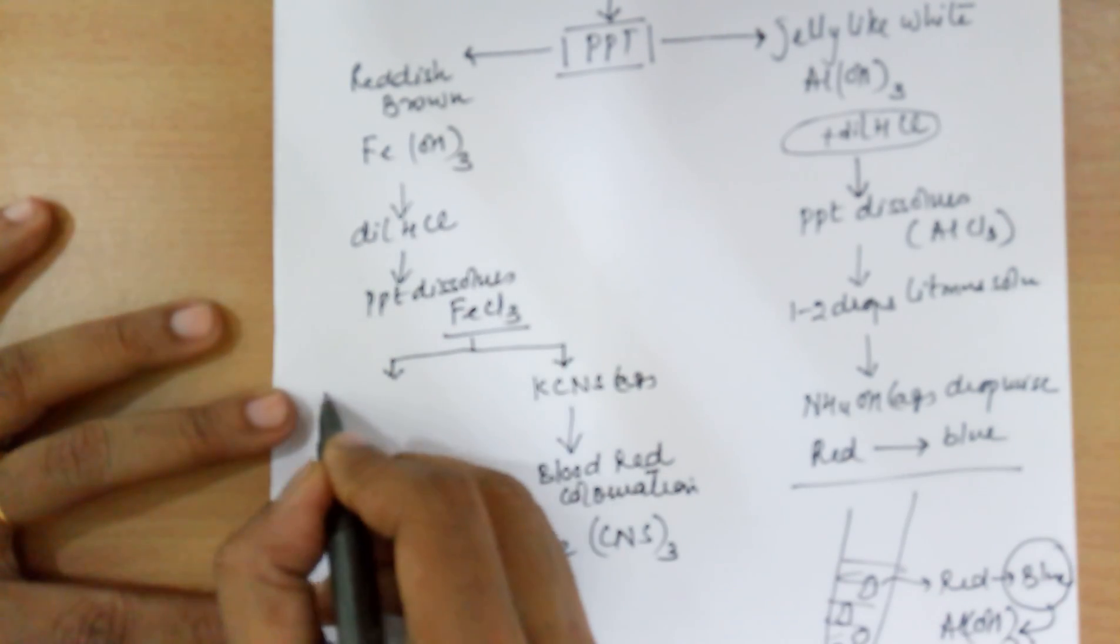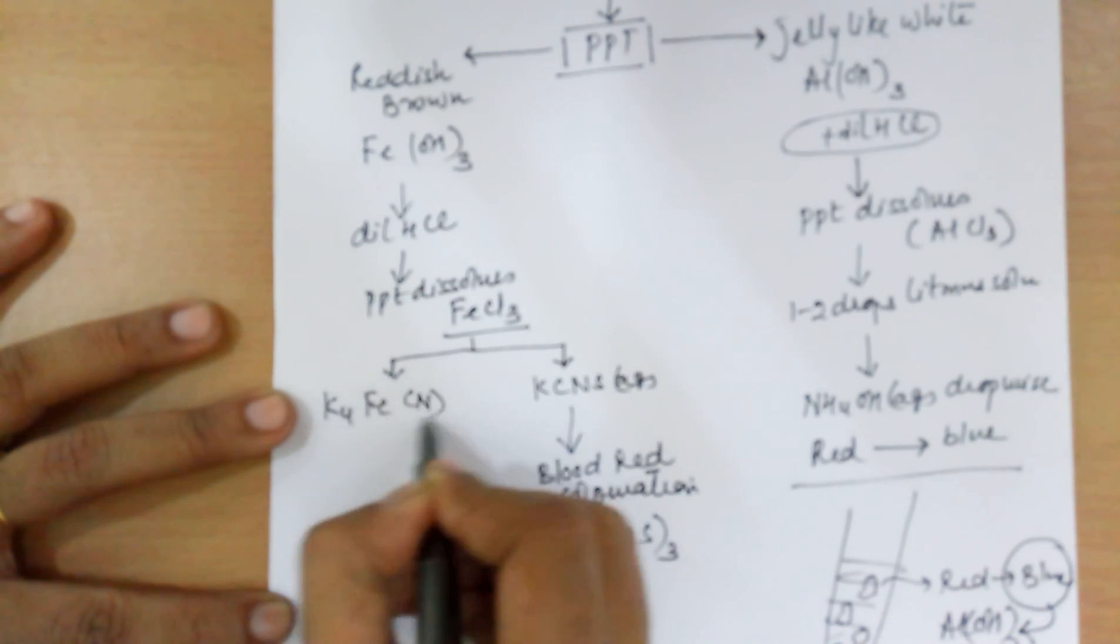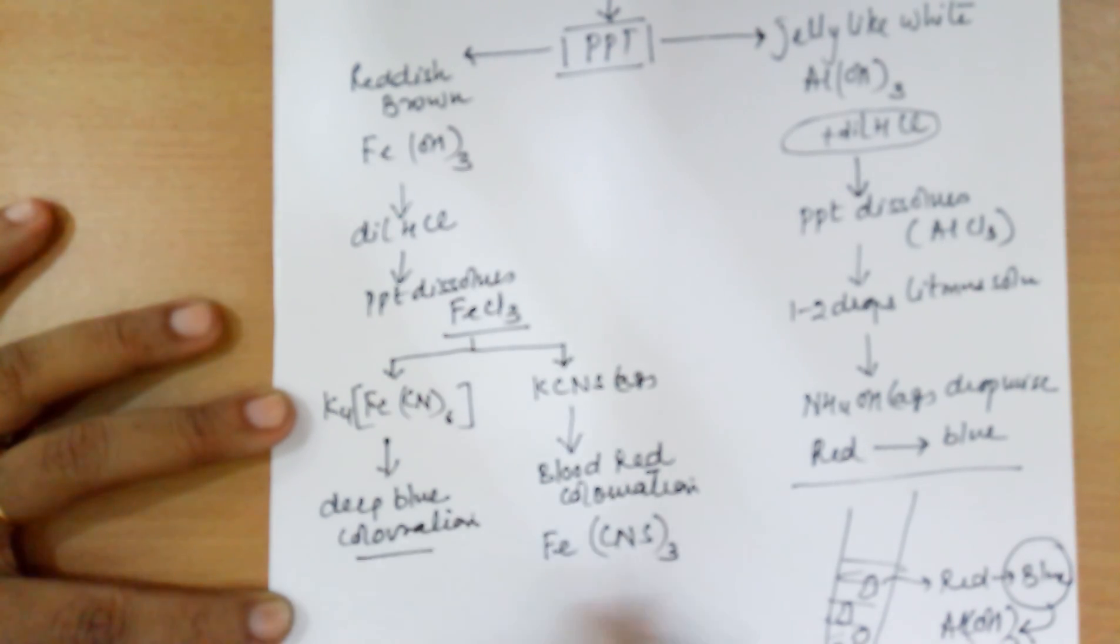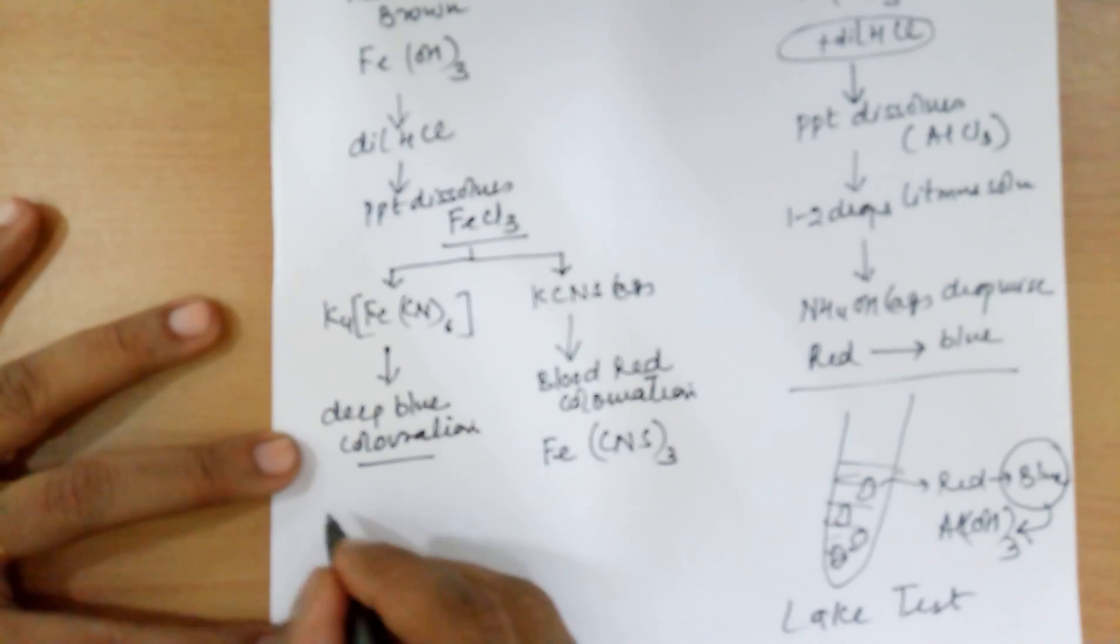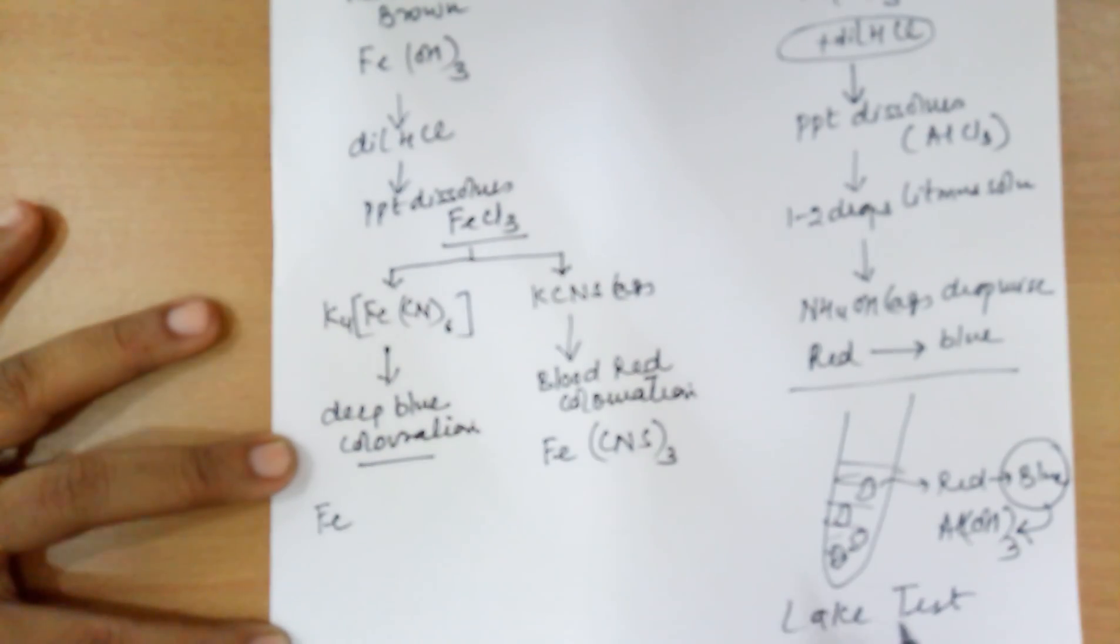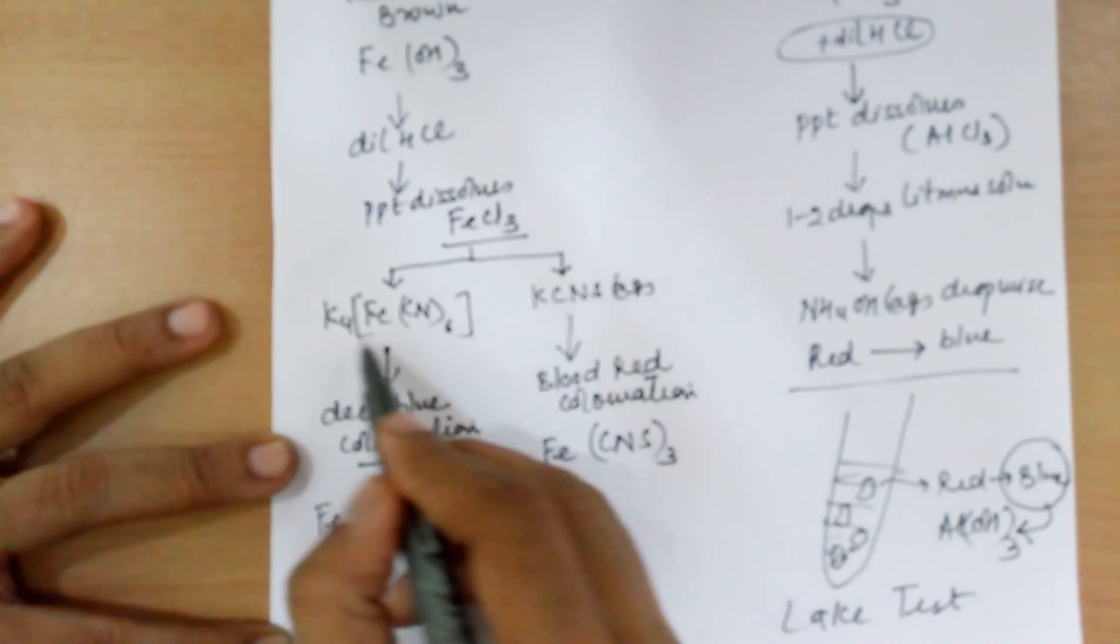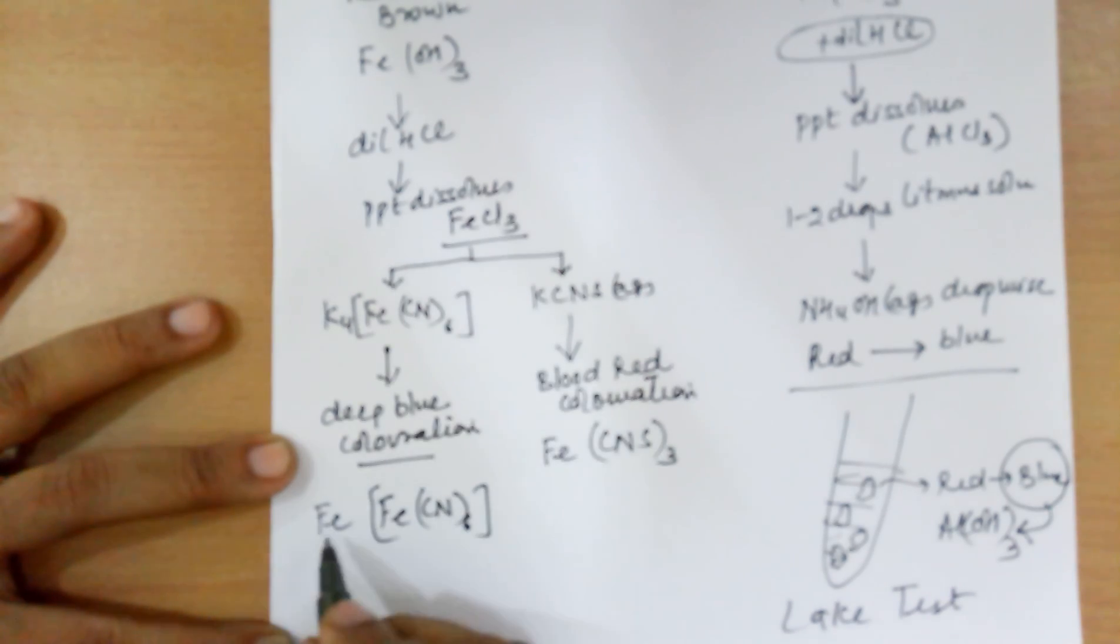To the second part, add potassium ferrocyanide solution. You will end up in a deep blue or Prussian blue coloration confirming the presence of iron. And the formula for this would be iron with valency 3. Ferrocyanide has a valency of 4, which is clear from here. Valency 3 for iron, 4 for ferrocyanide, leads to the final formula being this. Thank you.